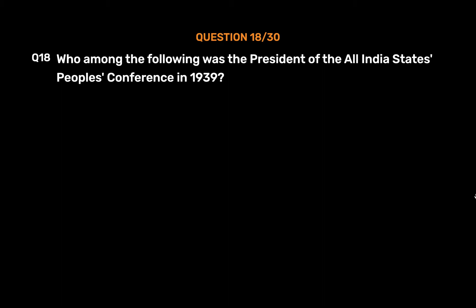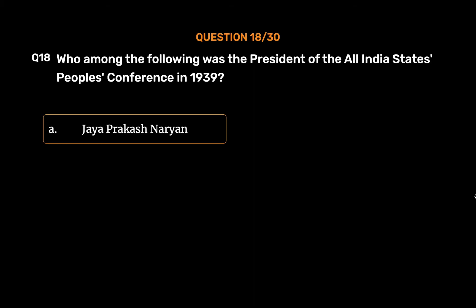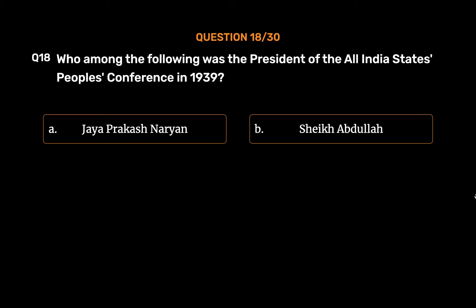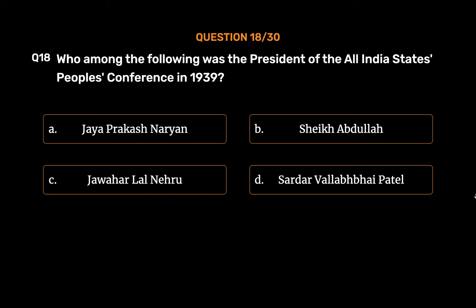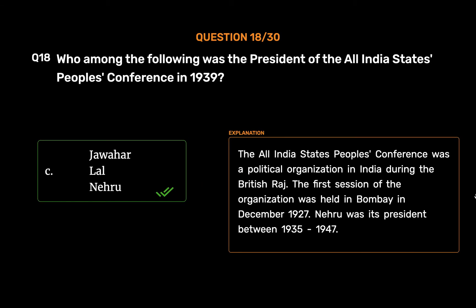Question No. 18. Who among the following was the president of the All-India States People's Conference in 1939? Option A: Jaya Prakash Narayan. Option B: Sheikh Abdullah. Option C: Jawaharlal Nehru. Option D: Sardar Vallabh Bhai Patel. The correct answer is Option C: Jawaharlal Nehru. The All-India States People's Conference was a political organization in India during the British Raj. The first session was held in Bombay in December 1927. Nehru was its president between 1935 to 1947.